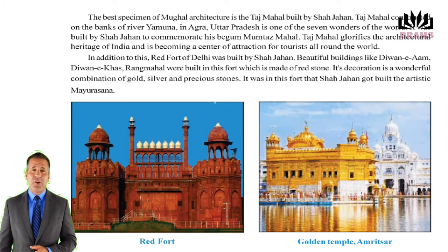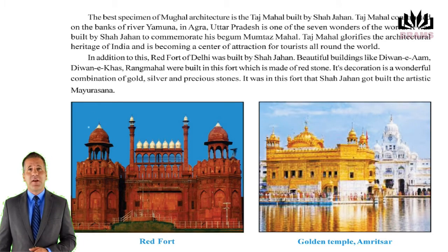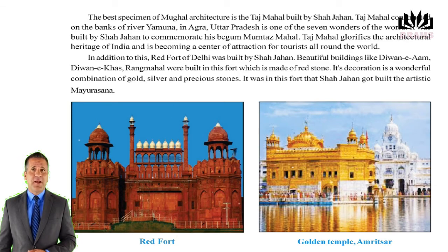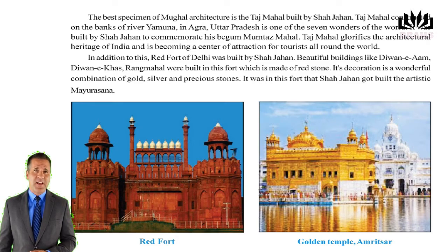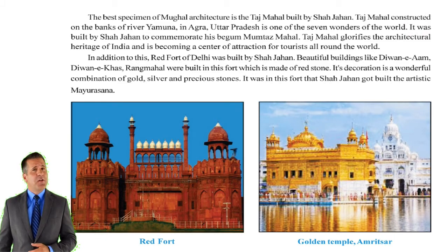In addition to this, the Red Fort of Delhi was built by Shah Jahan. Beautiful buildings like Diwan-e-Am, Diwan-e-Khas, and Rangmahal were built in this fort which is made of red stone. Its decoration is a wonderful combination of gold, silver and precious stones. It was in this fort that Shah Jahan got built the artistic Mayurasana. During this time, the best architectural piece, the Golden Temple of the Sikh sect, was built in Amritsar.